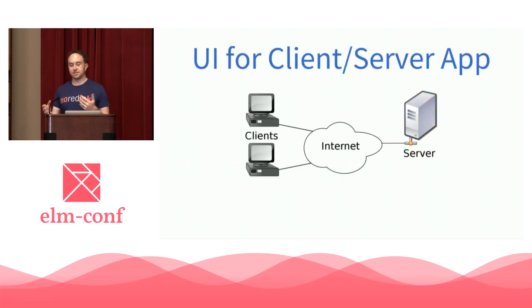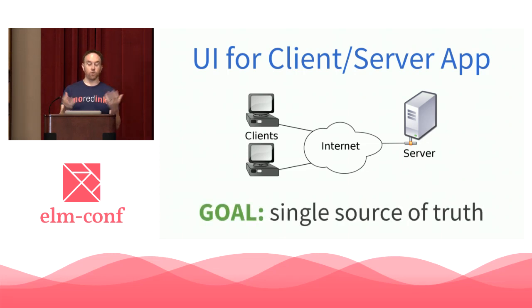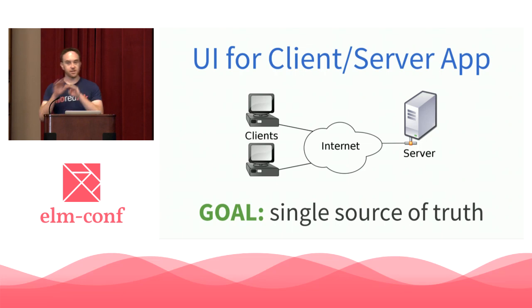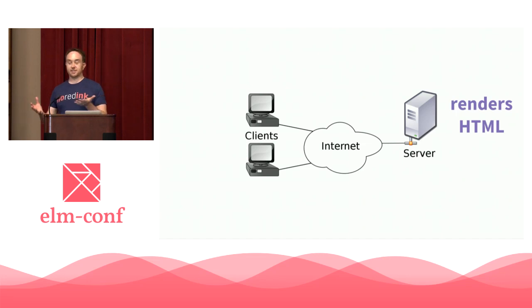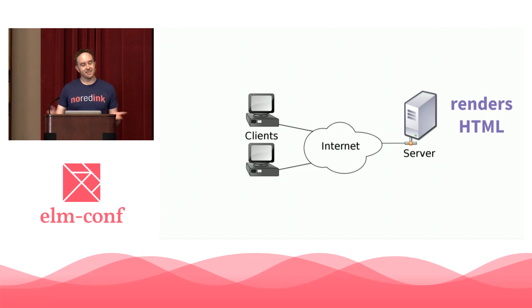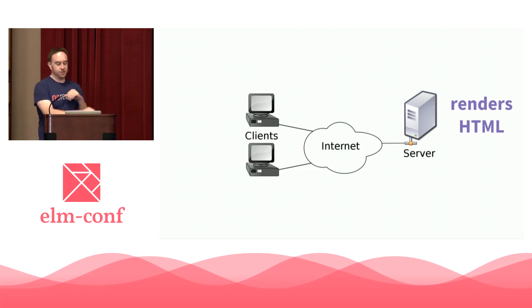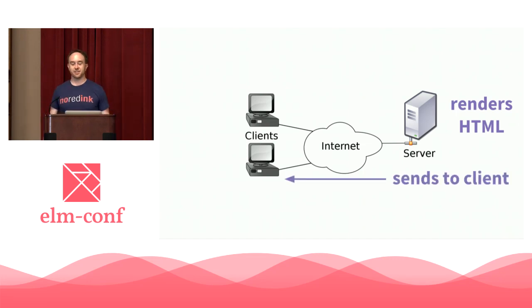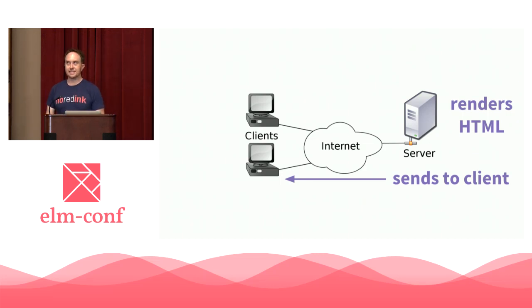Let's take a client-server app as an example and see if we can arrange things to have a single source of truth. We could have the server render HTML like 15 years ago and send it directly to the client on every single user interaction — so the server is the single source of truth. The problem is that sending stuff from the server to the client takes time; there's latency.